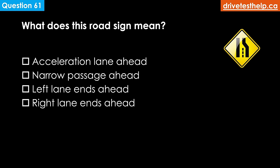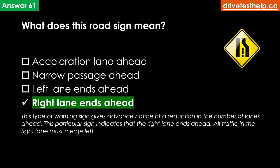What does this road sign mean? Options: acceleration lane ahead; narrow passage ahead; left lane ends ahead; right lane ends ahead. The correct answer is right lane ends ahead. This type of warning sign gives advance notice of a reduction in the number of lanes ahead — this particular sign indicates that the right lane ends ahead and all traffic in the right lane must merge left.